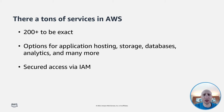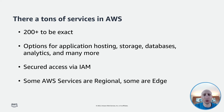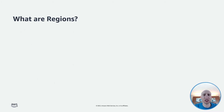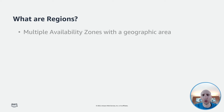AWS services are somewhat regional, but some also live out on the edge, and we'll talk about the difference between those two as we go throughout. So the first thing to talk about are regions. AWS has a concept of a region, which is a physical location around the world where we cluster data centers. We call each group of logical data centers an availability zone.